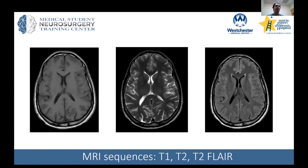MRIs can be obtained under different settings with the magnet, and this yields different sequences. Some of the main sequences for anatomic MRI are T1, T2, and T2 FLAIR.